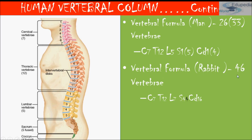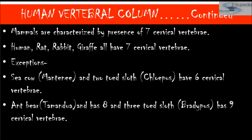The vertebral formula for rabbit is 46 total: C7, T12, L7, S4, and Cd16. Mammals are characterized by the presence of 7 cervical vertebrae — humans, rats, rabbits, and giraffes all have 7. Exceptions include sea cows with 6, anteaters with 8, and bradypus (three-toed sloth) with 9 cervical vertebrae.